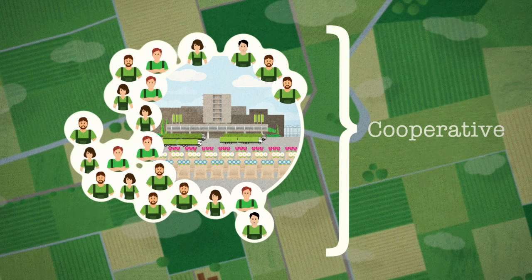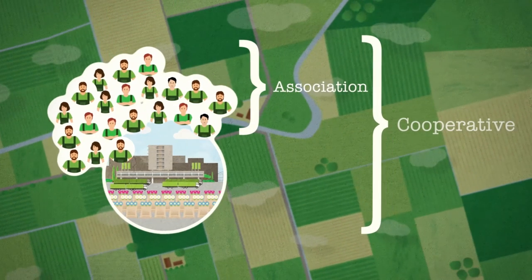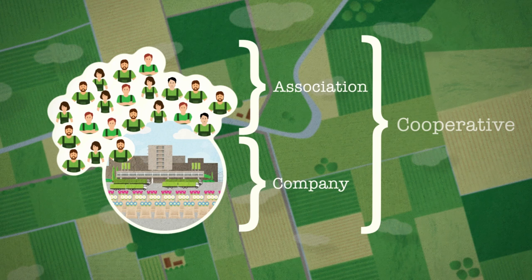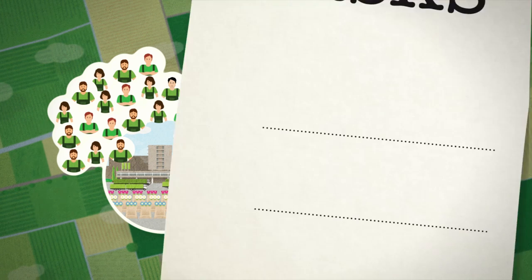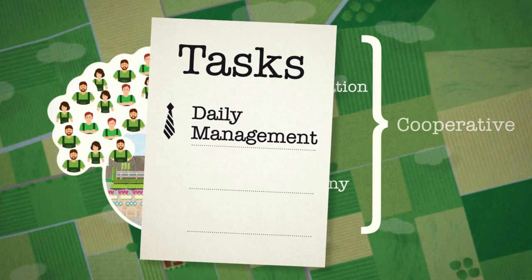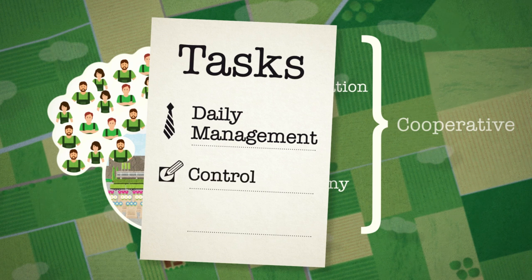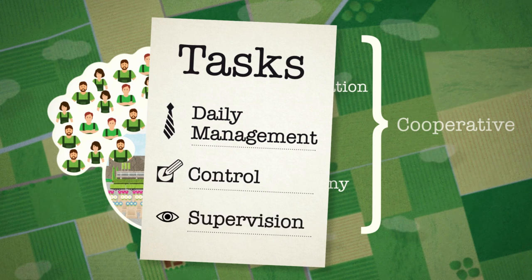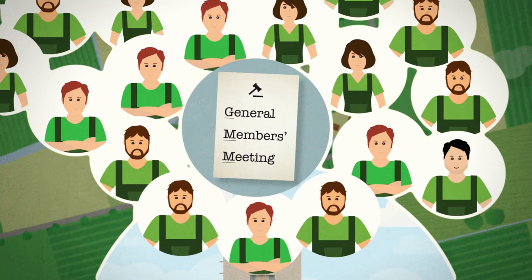As such, the cooperative consists of the associated growers and their joint company. It has the following tasks: the daily management of the association and the company, control over important decisions, and internal supervision. All tasks are discussed jointly by the members of the general members meeting.